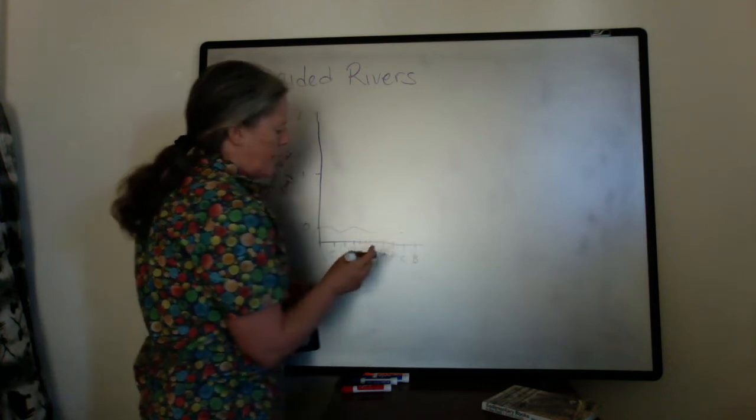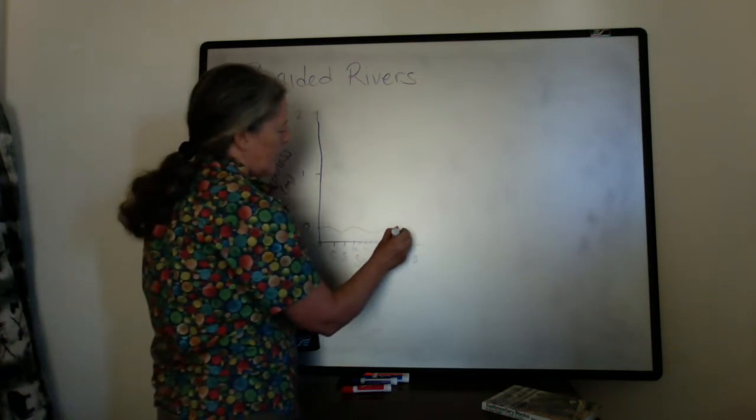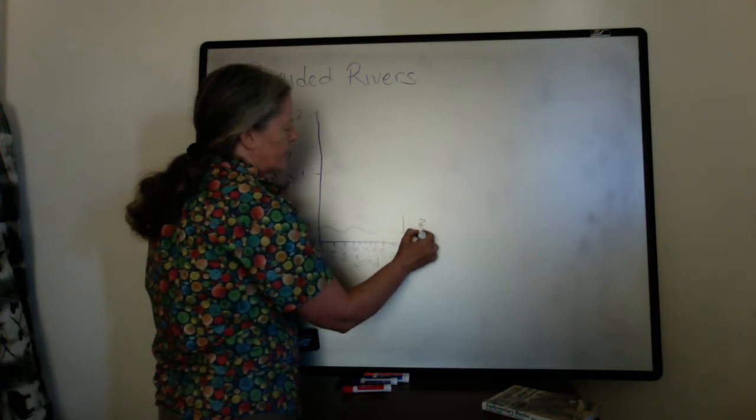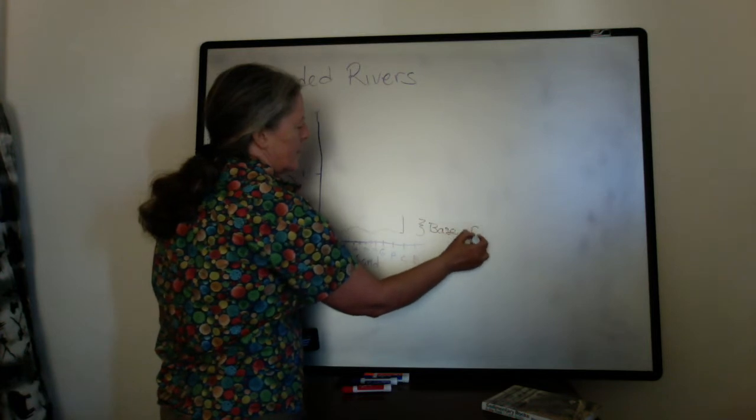And the cobbles can accumulate. They get deposited, brought in by floods and accumulate. And so this right here represents the base deposits at the base of the channel.